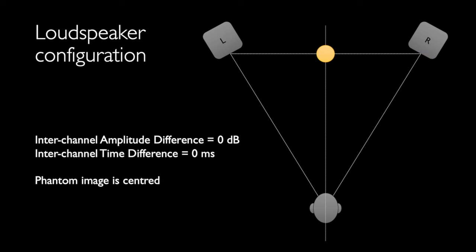Now I'm back in the center, with an inter-channel amplitude difference of 0 decibels and an inter-channel time difference of 0 seconds. Now I'll do the same trick again, but this time I'm not going to change the levels of the two loudspeakers — I'm only going to change their relative time delay.